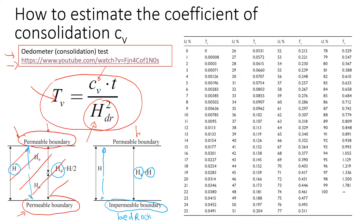For a small-scale laboratory test, we talk about the height of the sample. Typically for all oedometer tests we have double drainage — drainage at the top and at the bottom of the sample. Now let's look at the time factor Tv.